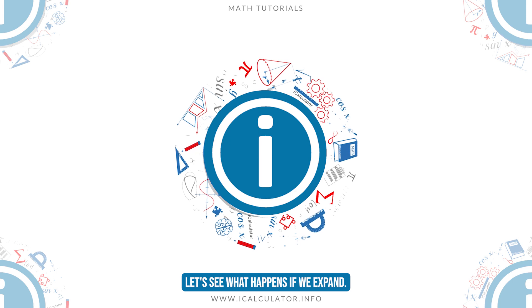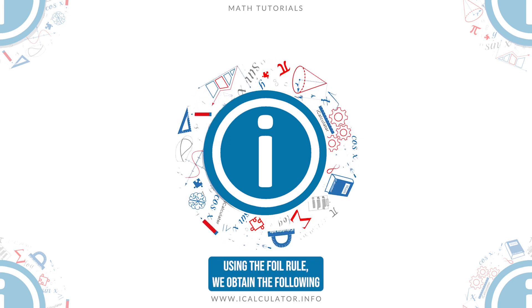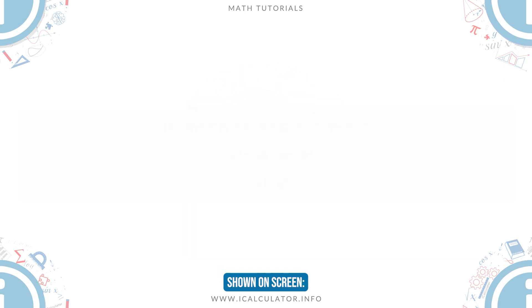Let's see what happens if we expand two conjugates that multiply with each other. Using the FOIL rule, we obtain the following shown on screen.